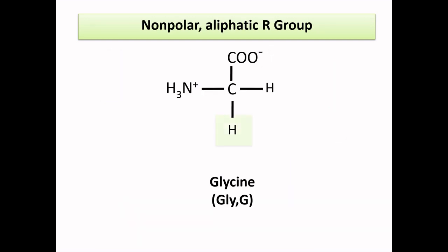Glycine has hydrogen as the side chain, so this is the simplest amino acid among all amino acids. The alpha carbon in glycine is achiral because it has two hydrogens attached to it, so this is the only amino acid having an achiral carbon. Besides glycine, all other amino acids will have different side chains.